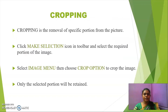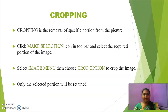Now we are getting into the editing process. First we are going to learn about cropping. Cropping means the removal of a specific portion from the picture. For example, if you are taking a photograph at a tourist place, some people may also get into that image. So if we want to remove those persons from that image, we can use the cropping function.